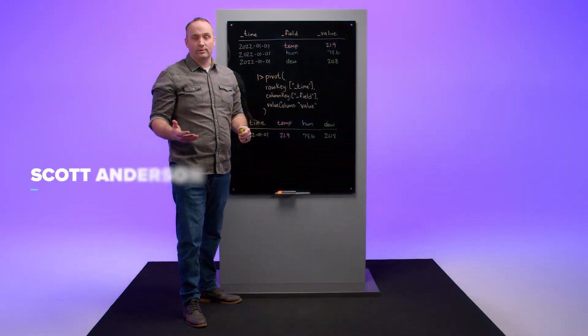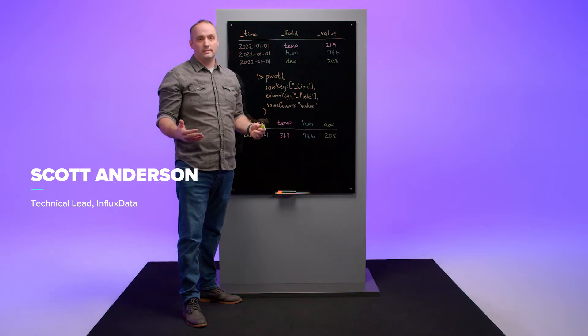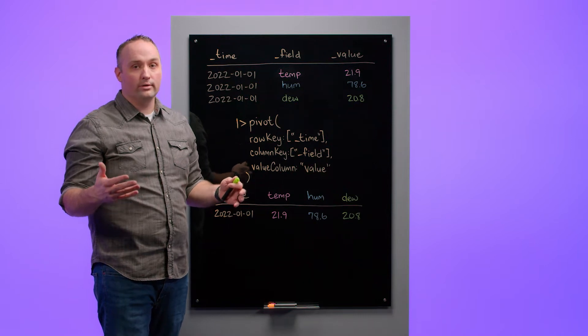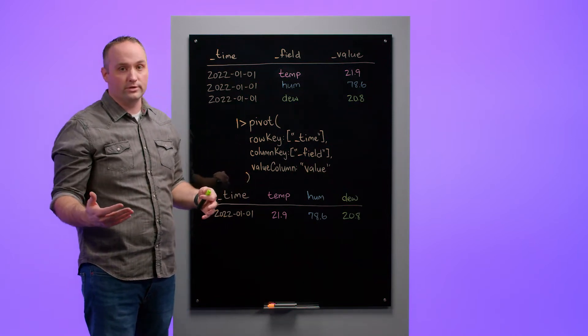Hi, I'm Scott Anderson, tech lead on the product team at Influx Data, and today I'm going to talk to you about pivoting data in Flux. The most common use case for pivoting data is aligning two or more fields into rows based on time so you can operate on those fields.